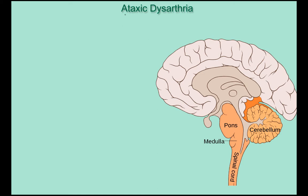Ataxic dysarthria. 'Ataxic' actually means lack of order, which suits quite well as you'll see in this video. The mechanism of ataxic dysarthria — it's not one that affects the direct motor pathway. It's not like spastic or unilateral upper motor neuron that affects the upper or lower motor neuron directly as in flaccid dysarthria. It's one that affects the extrapyramidal system, which is the basal ganglia, the cerebellum — those parts of the brain that affect movement, but not the direct route.